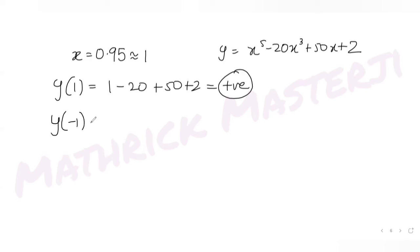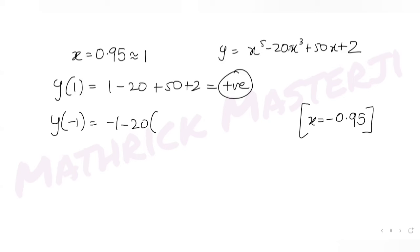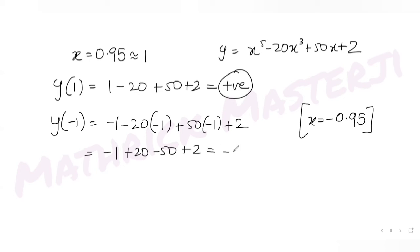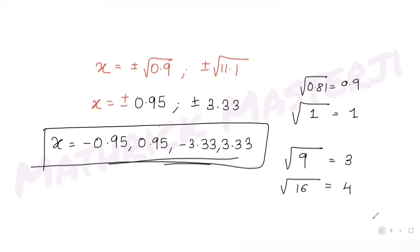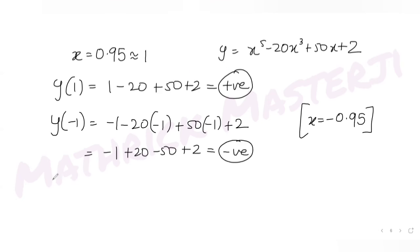At x ≈ -0.95 (approximated as -1): y = (-1)⁵ - 20(-1)³ + 50(-1) + 2 = -1 + 20 - 50 + 2 = 22 - 51, which is a negative value. So the sign has changed between x = 0.95 and x = -0.95.